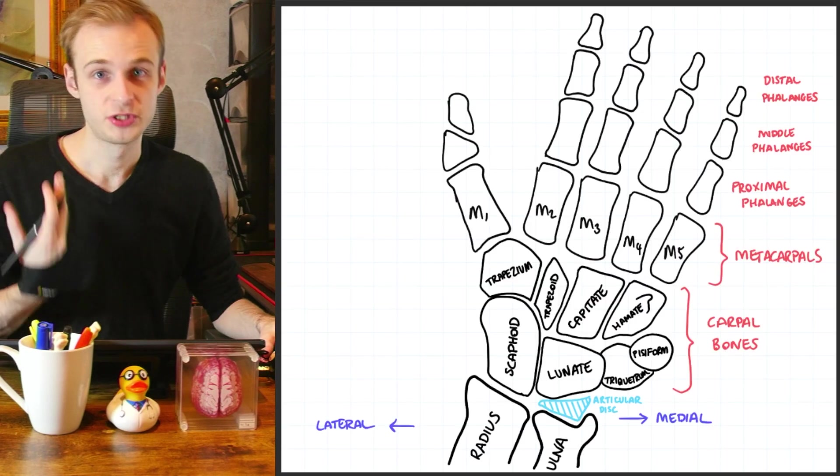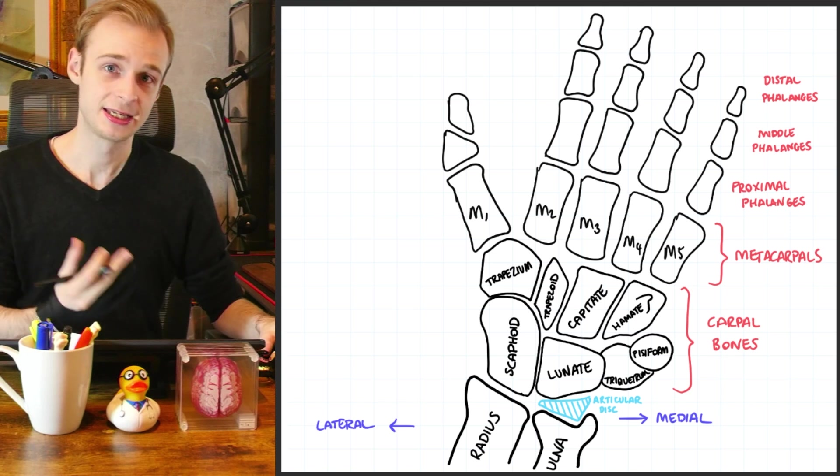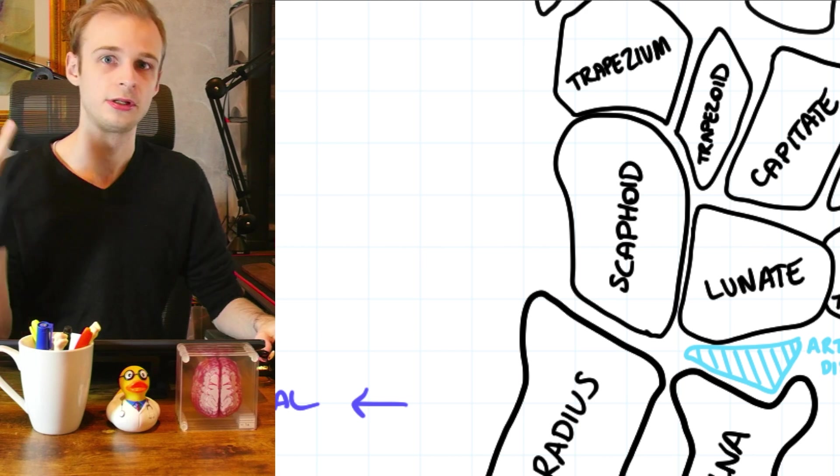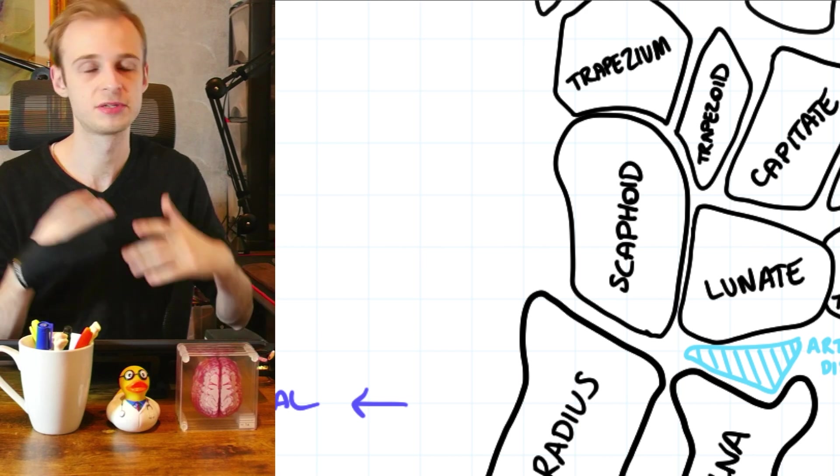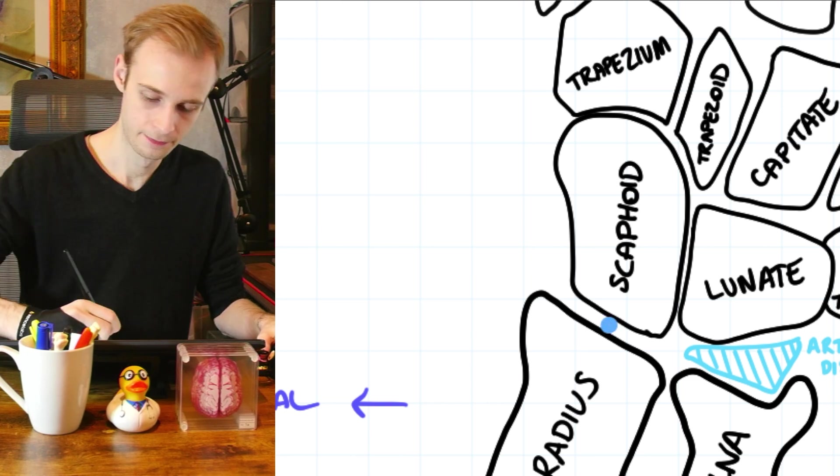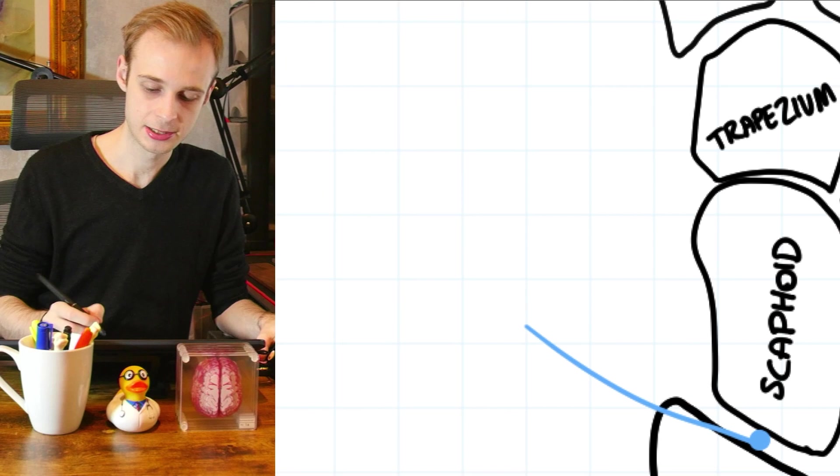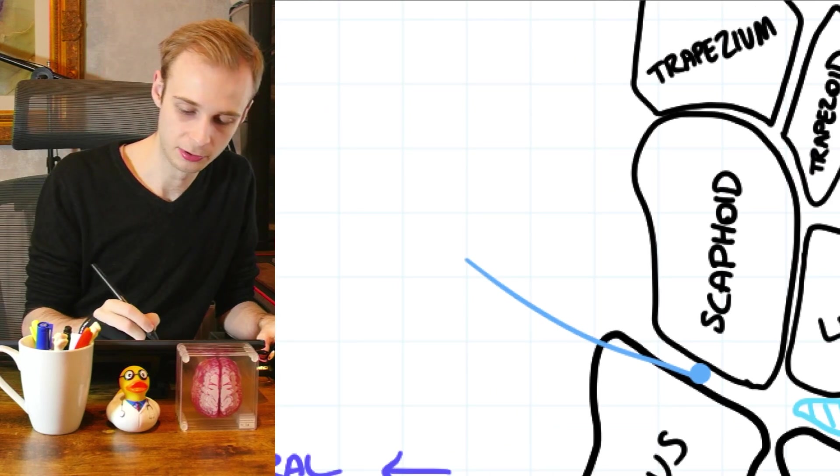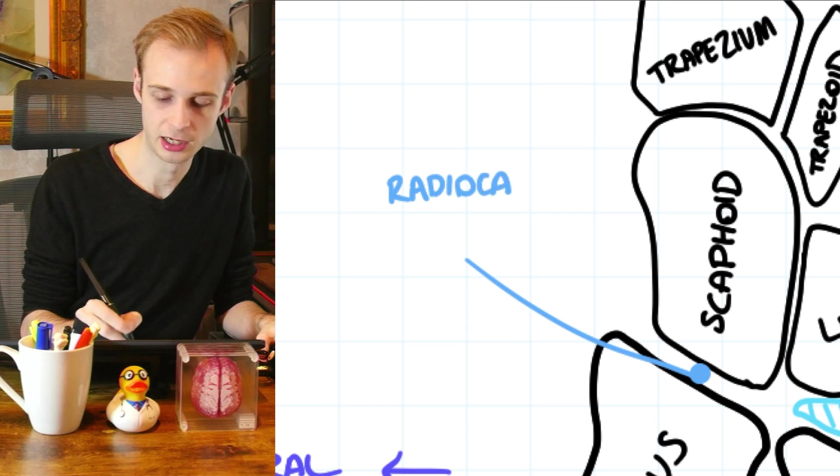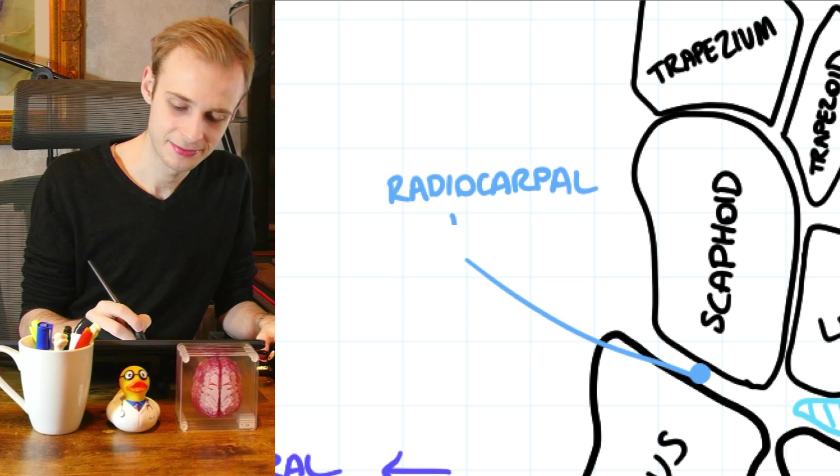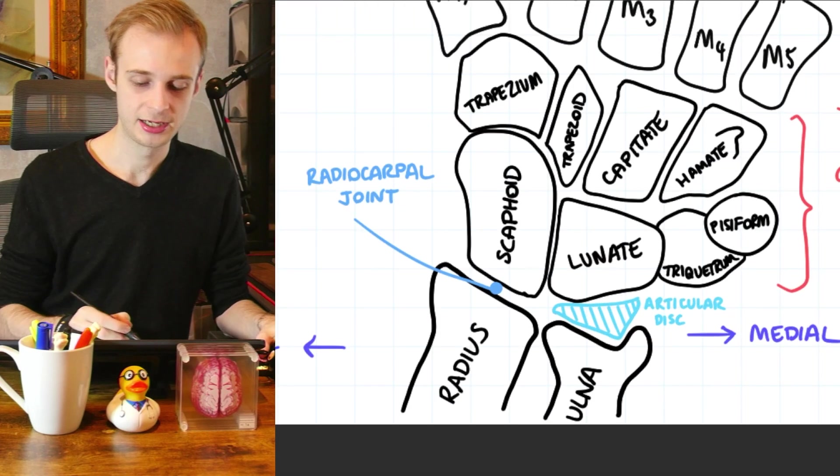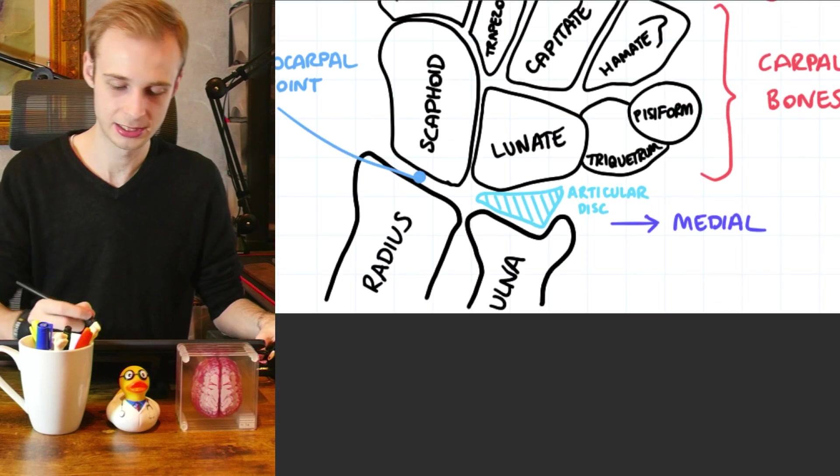So we're nearly there now. We've just got some features and articulations that we need to label for complete understanding. Because if we're trying to describe injuries or the locations of things, it's useful to be able to describe them in anatomical terms. So this here, where the radius meets the proximal row of the carpal bones, we call the radiocarpal joint. Anatomy is so easy. Things are just named for what they are. It's where the radius meets the carpal bones. Nice and easy.